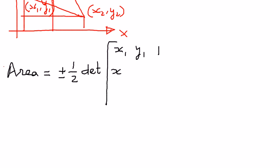The second point is x2, y2, and we put a one after that. This is the formula we're going to use to find the area of a triangle. The third point is x3, y3, and then one.